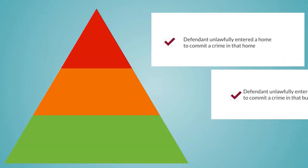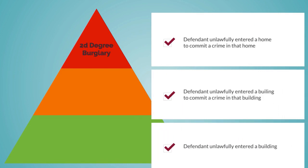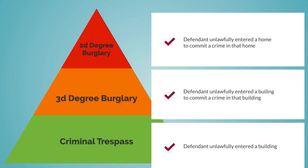Now we have three crimes, each more serious than the other, with second-degree burglary most serious because it involves a home. Less serious than that is third-degree burglary, which involves unlawfully entering a building to commit a crime. And least serious is criminal trespass, which only involves unlawful entry. So let's look at an example where someone is charged with third-degree burglary.